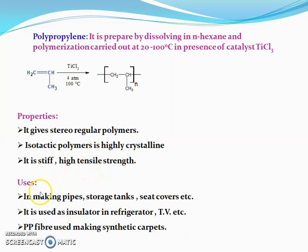Polypropylene is mainly used for making pipes, storage tanks, packing films, and seat covers. It is also used to make various sheets used in refrigerators and TVs, and as an insulator. Polypropylene is also used for making fibers for synthetic carpets.